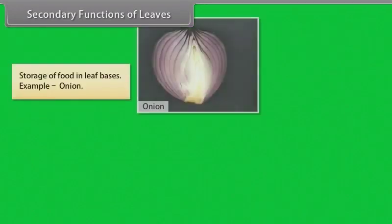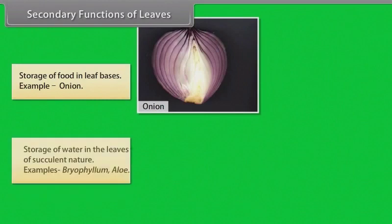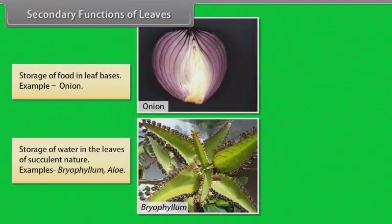Secondary functions of leaves. Storage of food in leaf bases, example: onion. The storage of water in the leaves of succulent nature, example: Bryophyllum, Aloe.